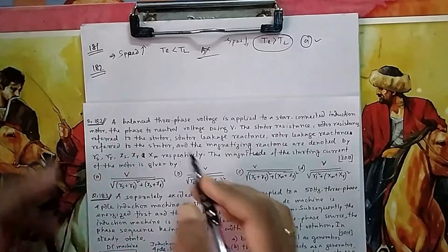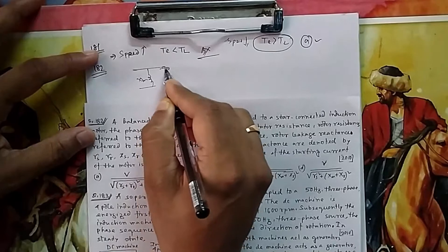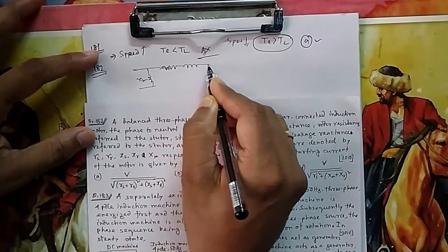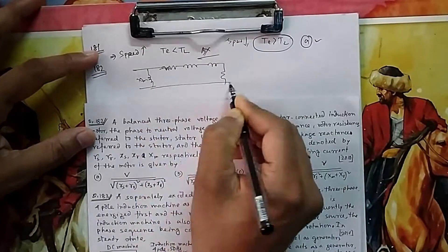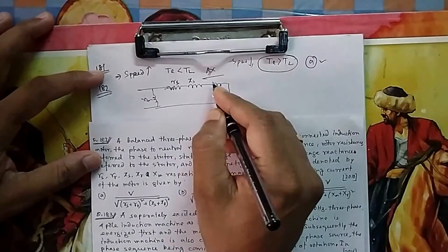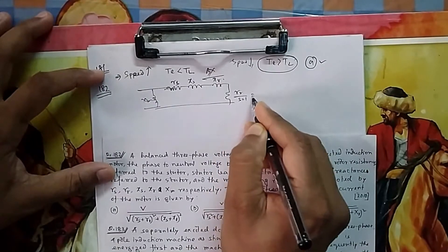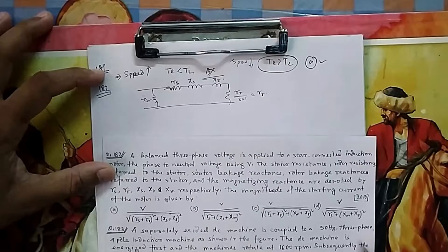In the approximate model, this is your XM, this is RS, XS, this is XR, and this was RR by S. But at starting S equals 1, so it is RR. This current is the starting current.